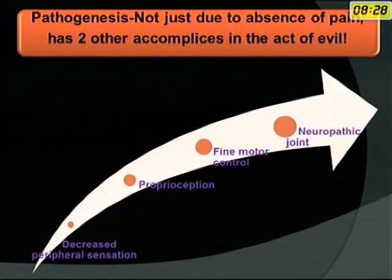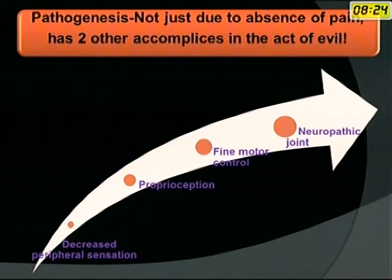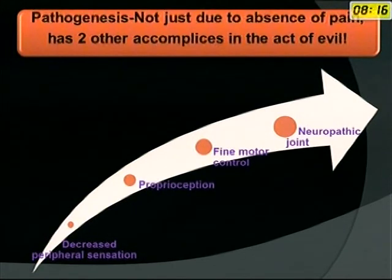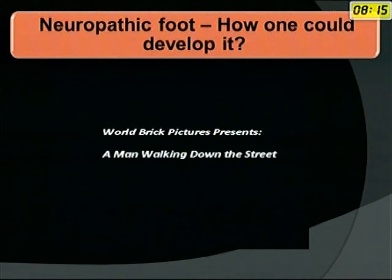Along with this decreased peripheral sensation, there are two more accomplices in the act of evil: poor proprioception and poor fine motor control. All three of these culminate into a neuropathic joint.